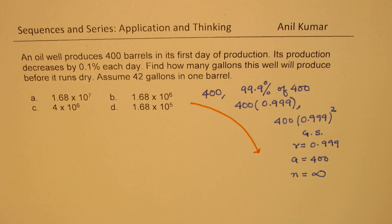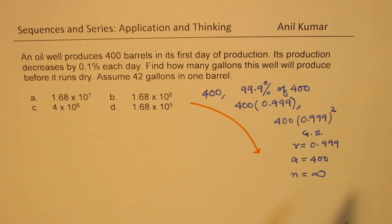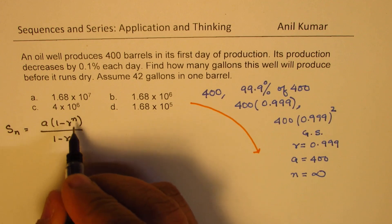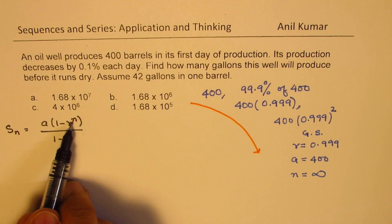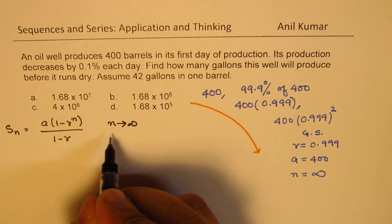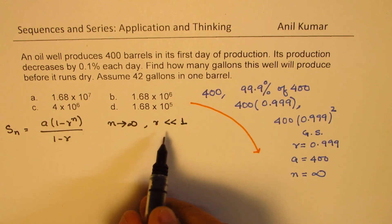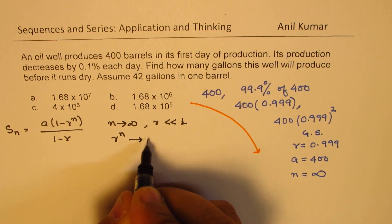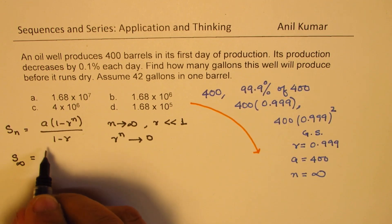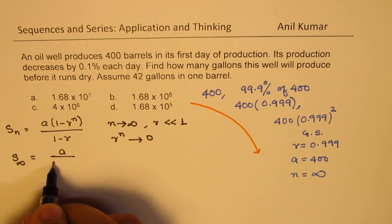Once you have everything clear, you can use the formula to find the sum of a geometric series where R is 0.999, A is 400, and N is infinitely large. In general, the sum for a geometric series is A times (1 minus R to the power of N) over (1 minus R). In this case, R is 0.999 and when N approaches infinity, R to the power of N approaches 0. Therefore, we derive the formula for the sum of infinite elements as A over (1 minus R).